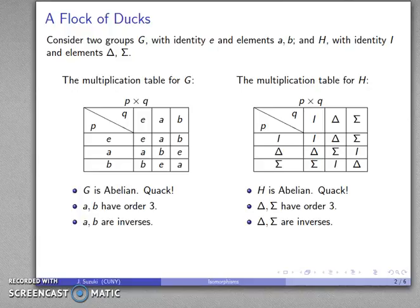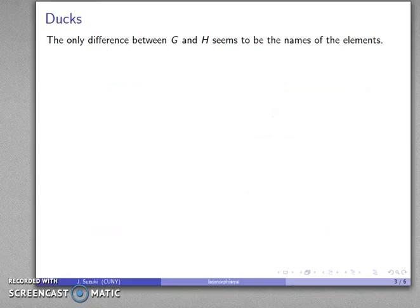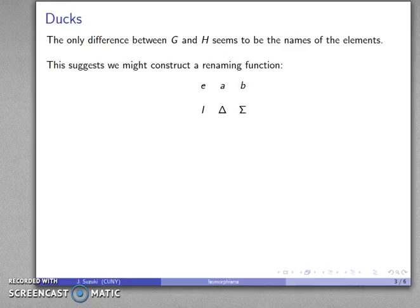They both quack like a duck, swim like a duck, and walk like a duck. They seem to be the same group, and the only real difference between the two is that the elements have different names. So maybe we can find a renaming function that takes the elements of G — E, A, and B — and relabels them as I, delta, and sigma.